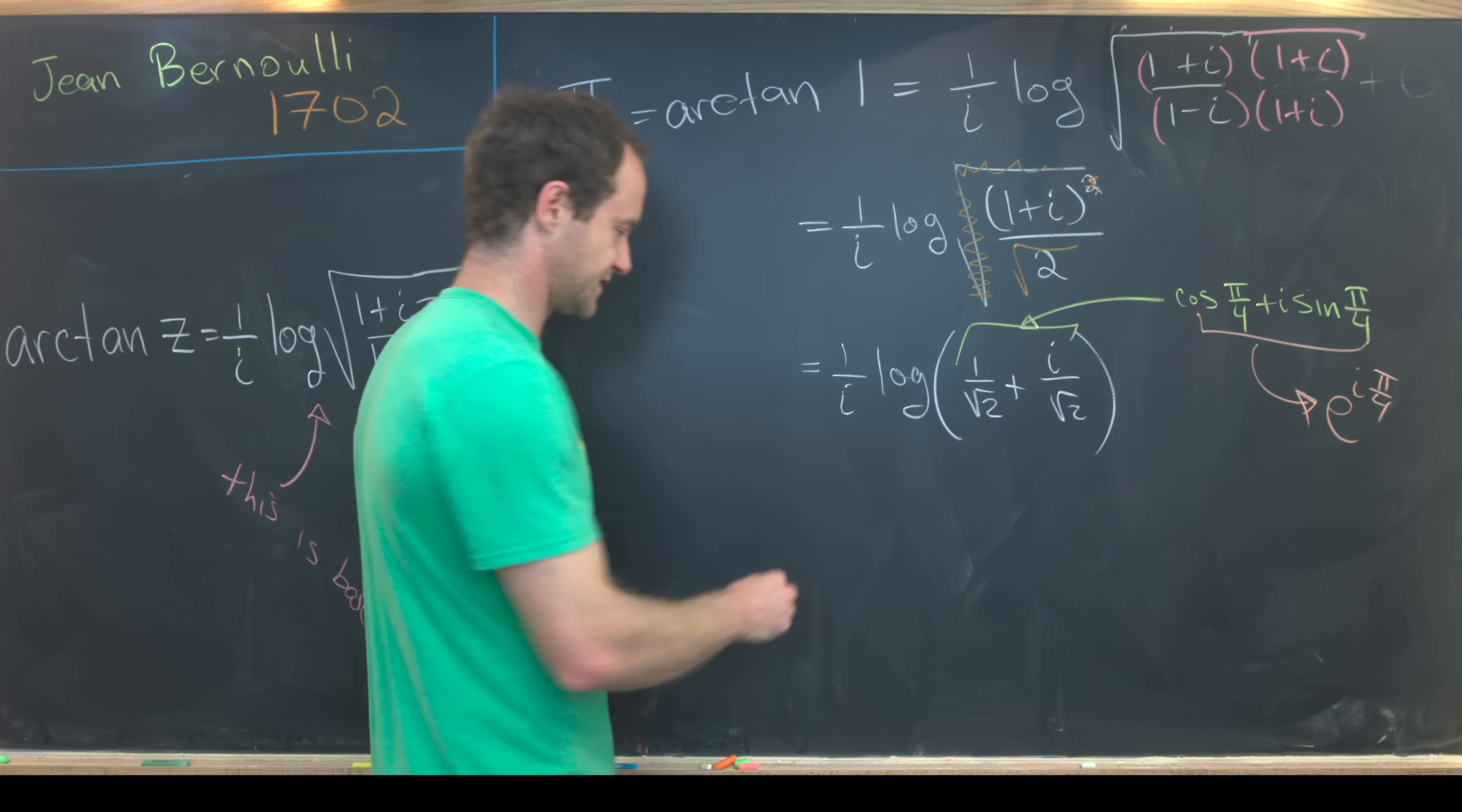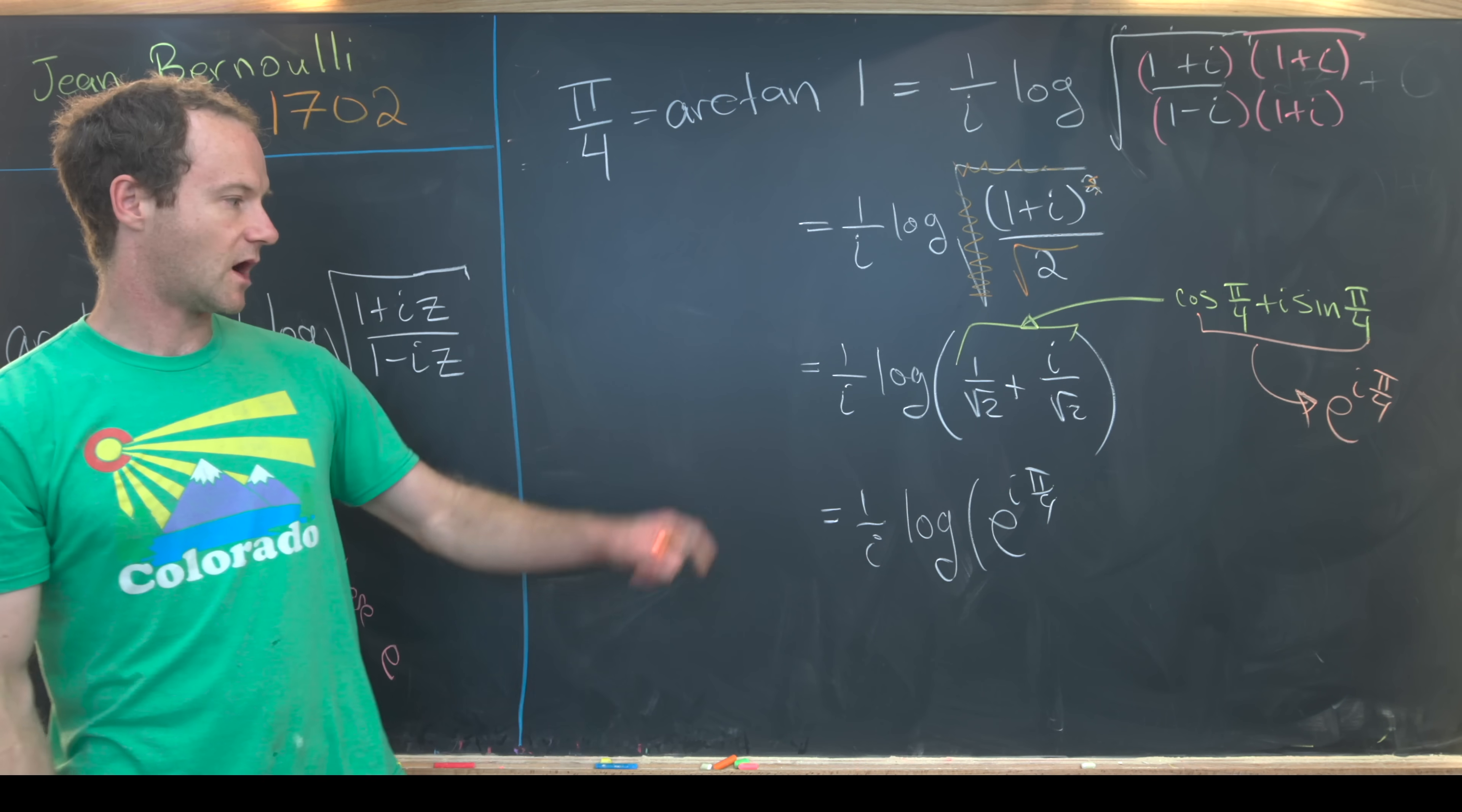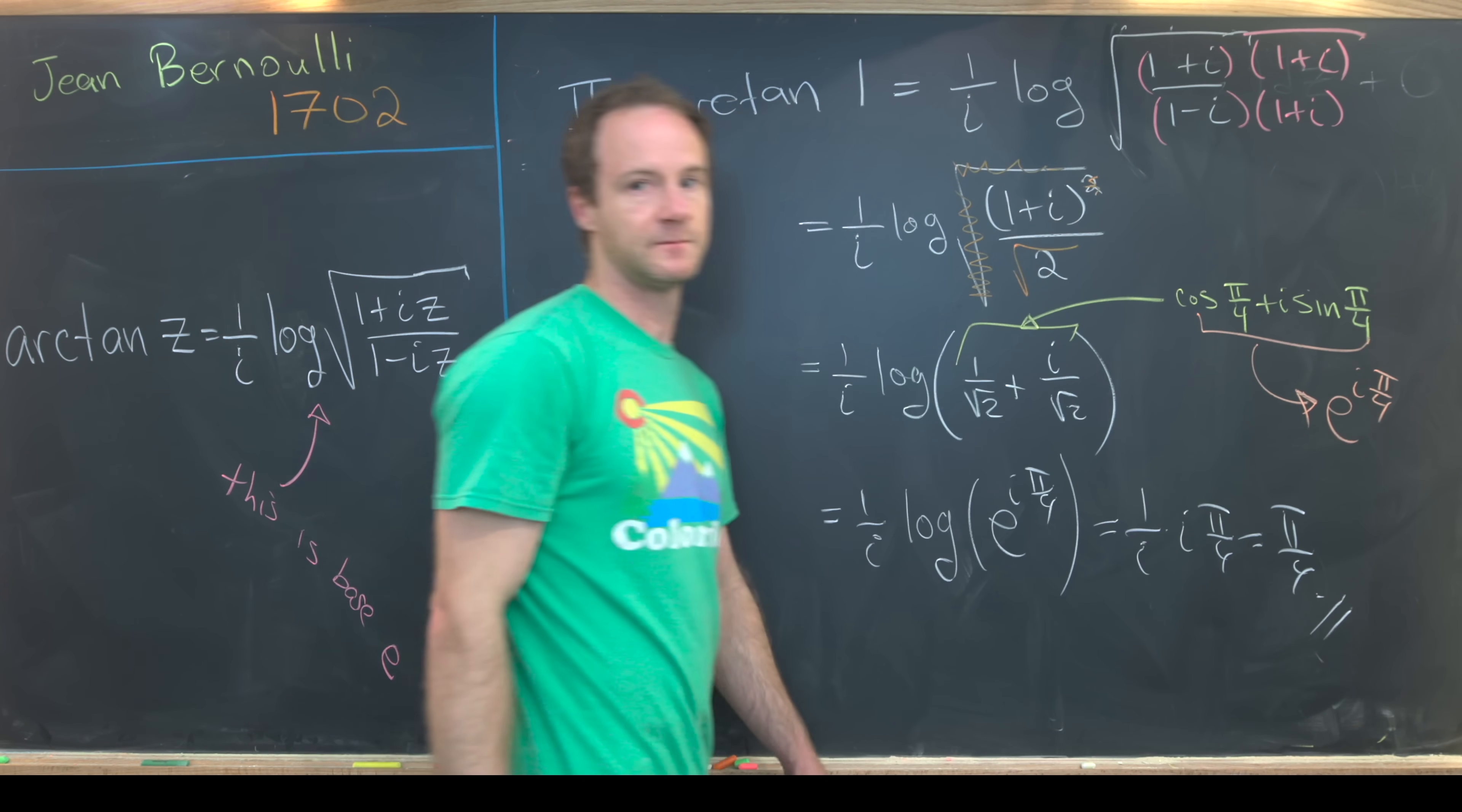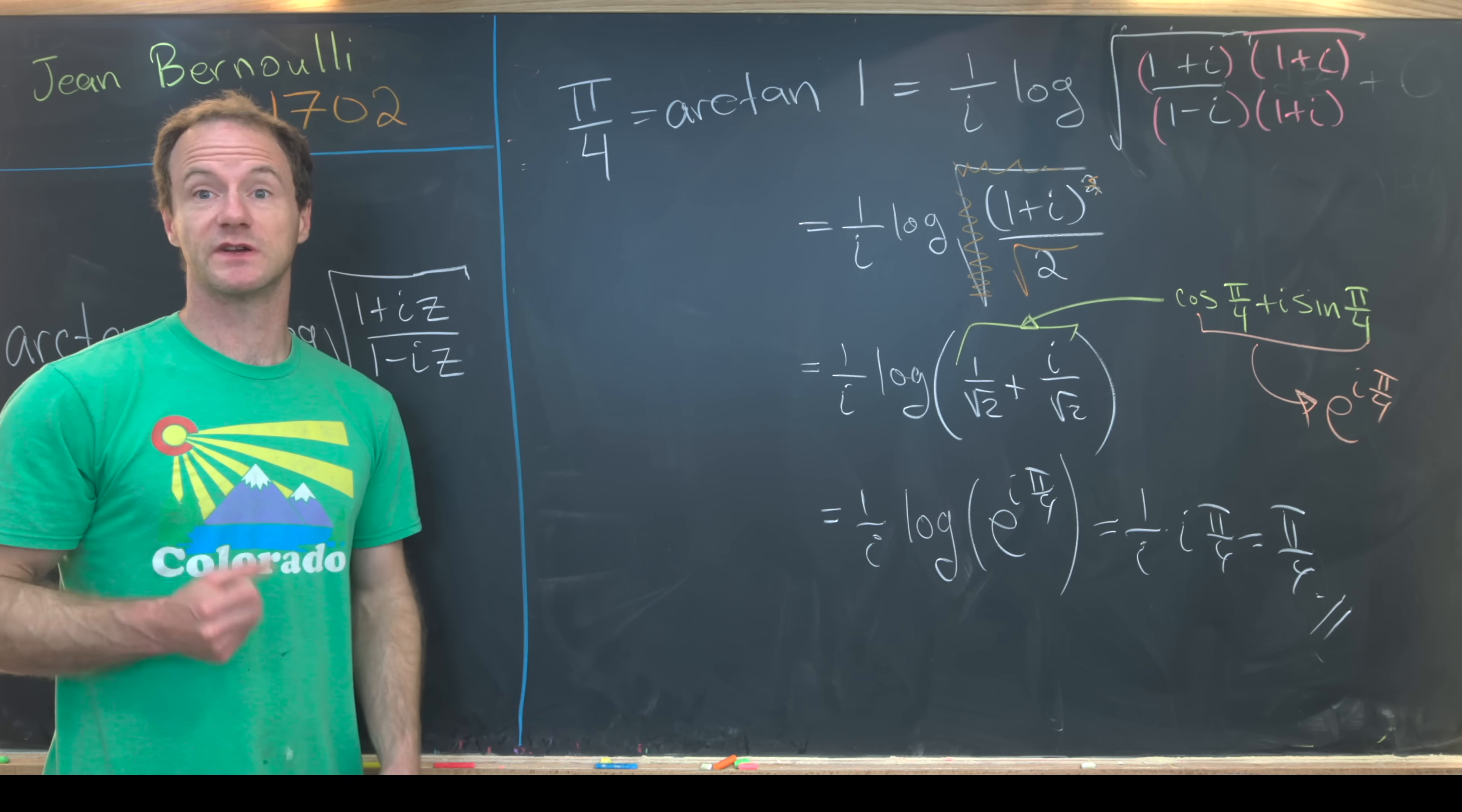So let's put all this together. We've got one over i times the log of e to the i times π/4. But now the logarithm and the exponential cancel each other, and we have one over i times iπ/4. But that gives us π/4 in the end. So obviously that was expected because we proved this identity was true. But I think this is a nice calculation just to check that everything works, and that's a good place to stop.